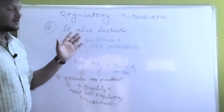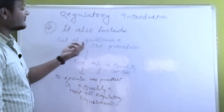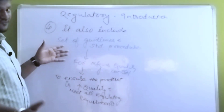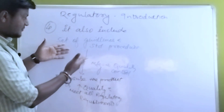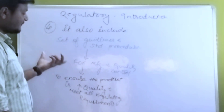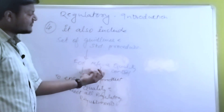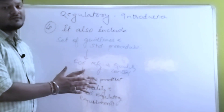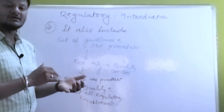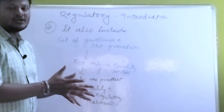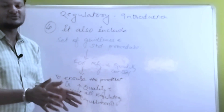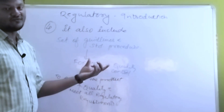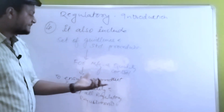Point number four: Regulatory also includes a set of guidelines and various kinds of standard procedures which ensure — intended for the manufacturing and quality control departments — that they control and regulate all aspects of pharmaceutical industries, all kinds of departments and functioning areas, including overall manufacturing, production area, packaging, raw material, and store department — manufacturing and QC sections.